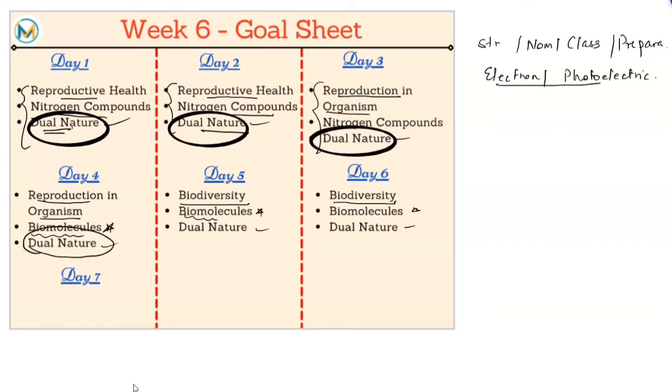As per the plan, the dual nature should get over by day four. If it doesn't, you can utilize day five, but try completing dual nature within day four. Now what will happen is you will get two extra slots if you complete dual nature by day four.